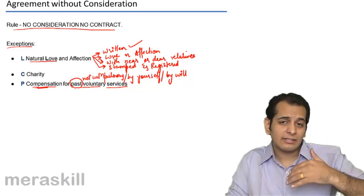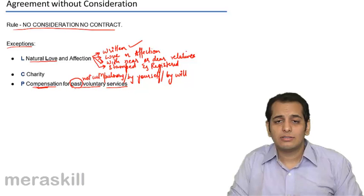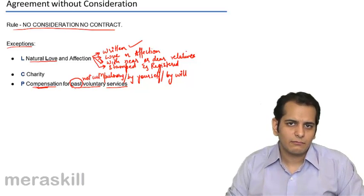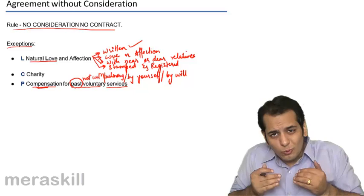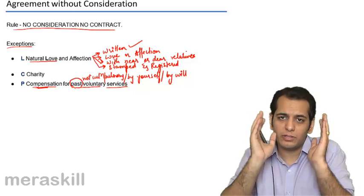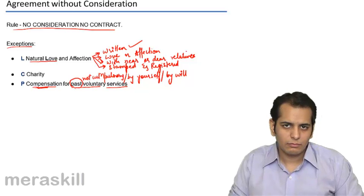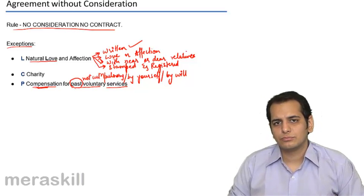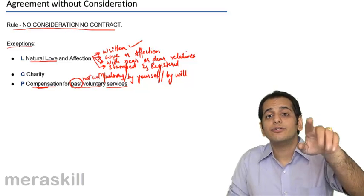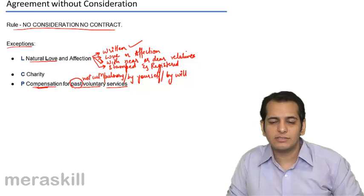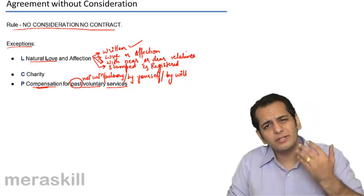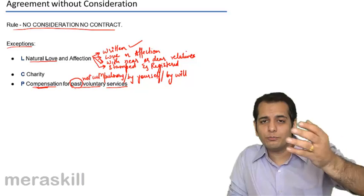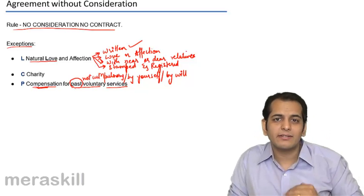But when I made the contract that I will pay you, that contract was devoid of any consideration. There was no business in that contract. It was only from my side that I said I will give you money, I will give you compensation. I actually did not receive anything in return from you. What you did was your wish. It was your fancy. It was your whim. It was your will. You did it by your own. I never told you anything to do. So now when I am giving you Rs. 1000, I am not getting anything against it.